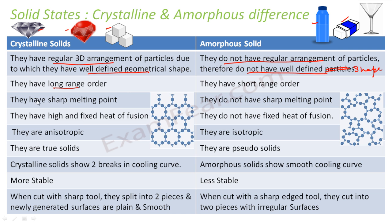Crystalline solids have a very sharp melting point — you heat them to a given temperature and they melt. Amorphous solids do not have a sharp melting point; they melt over a range of temperatures, from x degrees Celsius to y, slowly melting throughout.